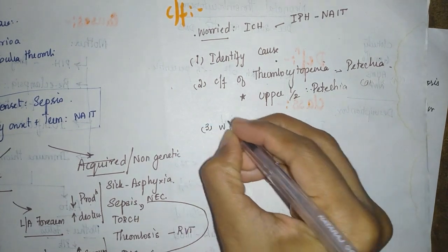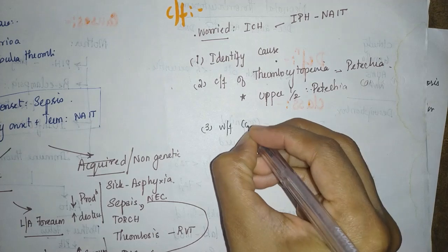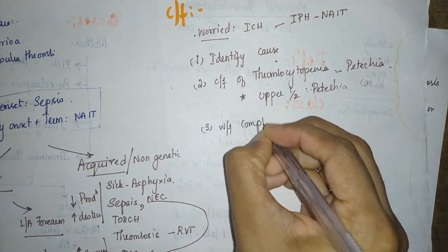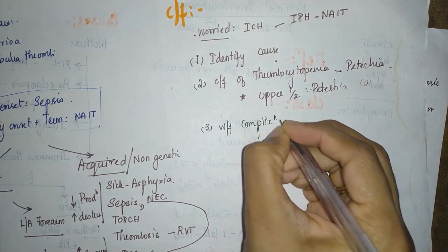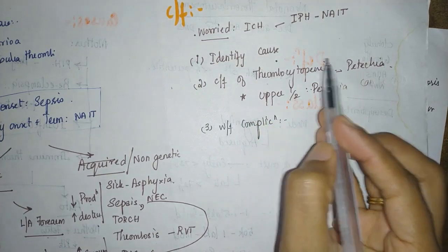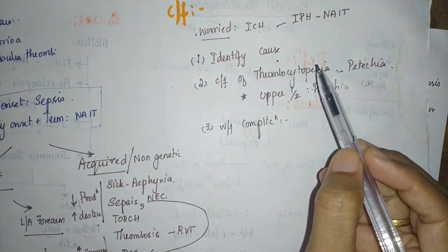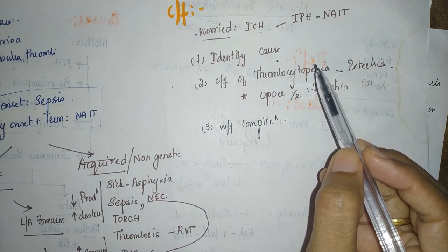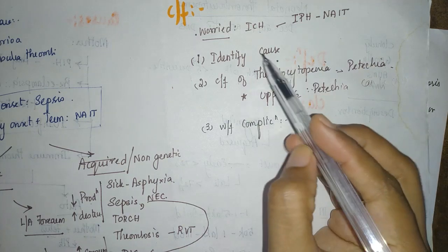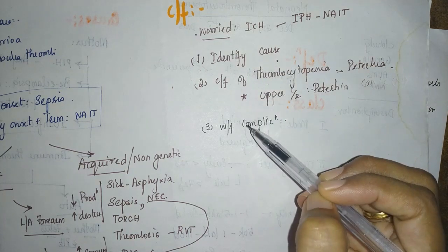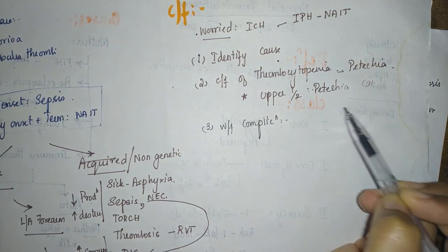You will also want to watch out for complications. Complications include intracranial hemorrhage and internal organ bleeding. This is how you will classify your clinical features.